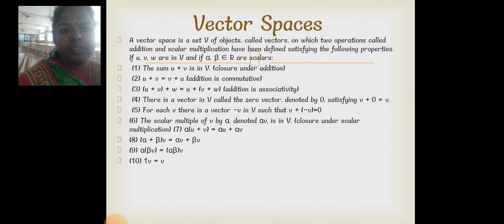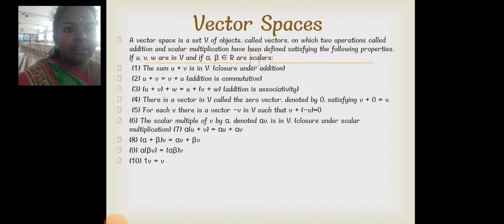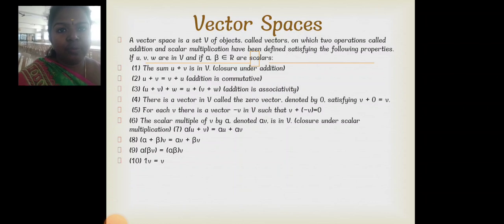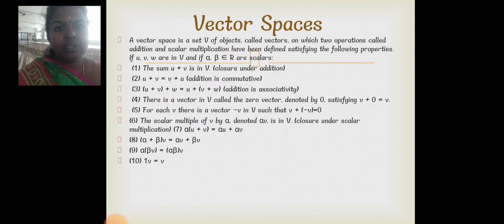The ten conditions are: (1) closure under addition — the sum U plus V is in V; (2) addition is commutative; (3) addition is associative; (4) there is a zero vector; (5) there exists a negative vector minus V; (6) closure under scalar multiplication; (7) alpha(U+V) = alphaU + alphaV; (8) (alpha+beta)V = alphaV + betaV; (9) alpha(betaV) = (alpha·beta)V; (10) 1·V = V.